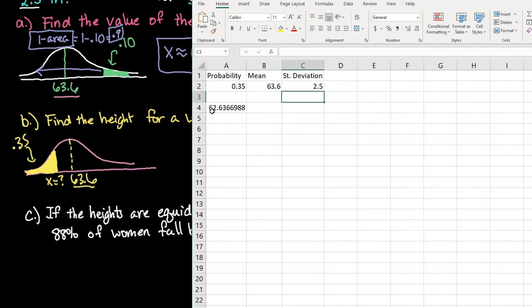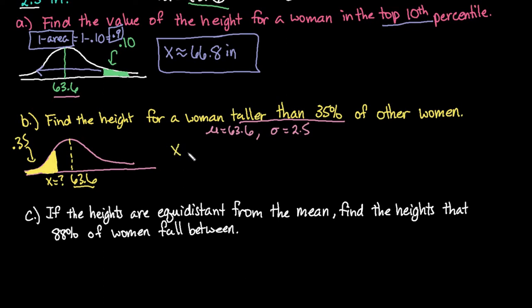So we could say that 62.6 inches is our x value. So someone who is 62.6 inches is taller than 35% of the other women in this population.